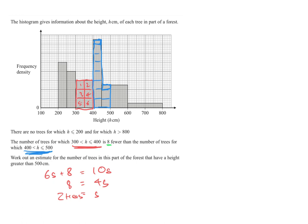Now it asks here to work out an estimate for the number of trees in this part of the forest that have a height greater than 500 centimeters. So greater than 500 centimeters. So that's from this point here on my graph all the way across to the end of my graph. So let's just look how many whole squares we've got.